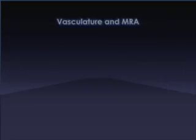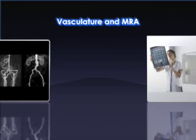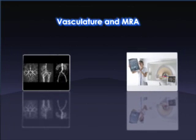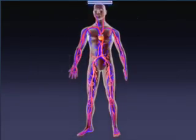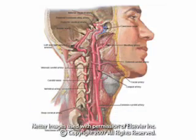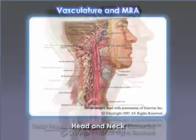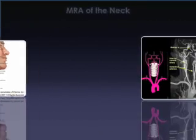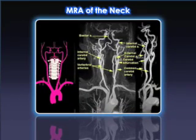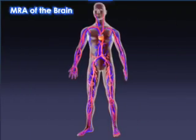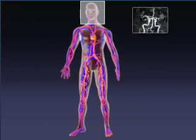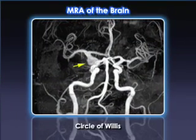Now we will review the vascular anatomy of certain body parts and some common pathology and disease processes. MRA of the head and neck region: here is a contrast enhanced MRA of the neck acquired at 1.5 Tesla. MRA of the brain typically uses no contrast media, while studies of the carotid arteries and body are done with or without contrast.